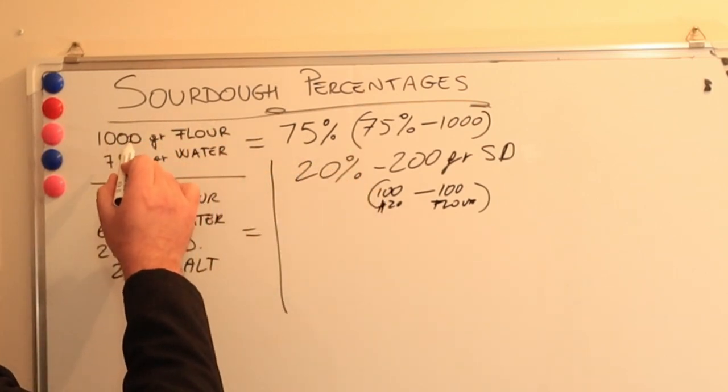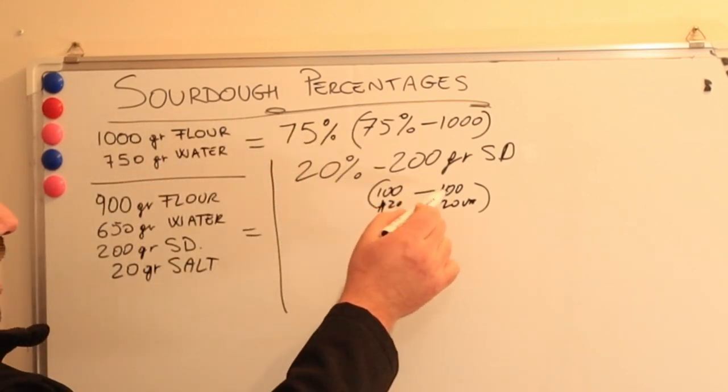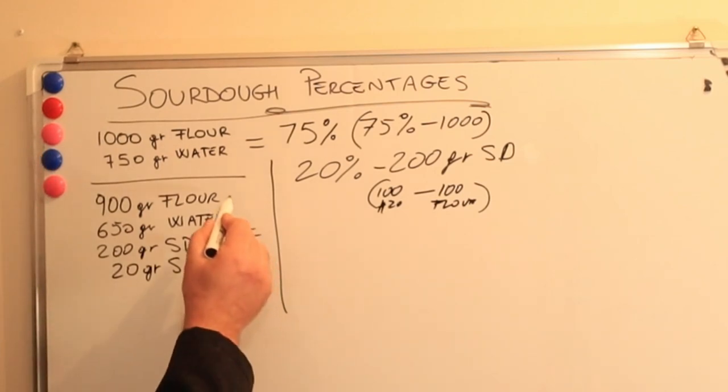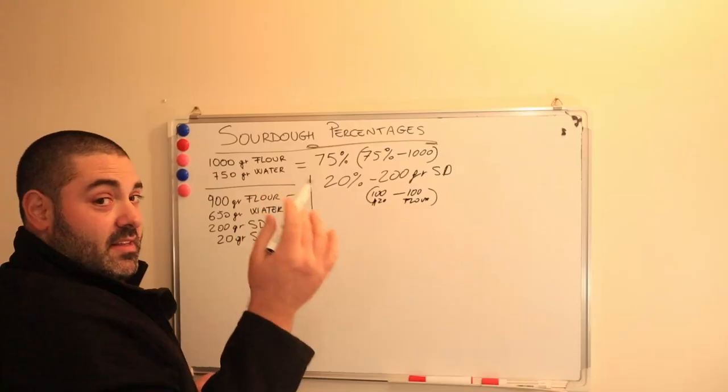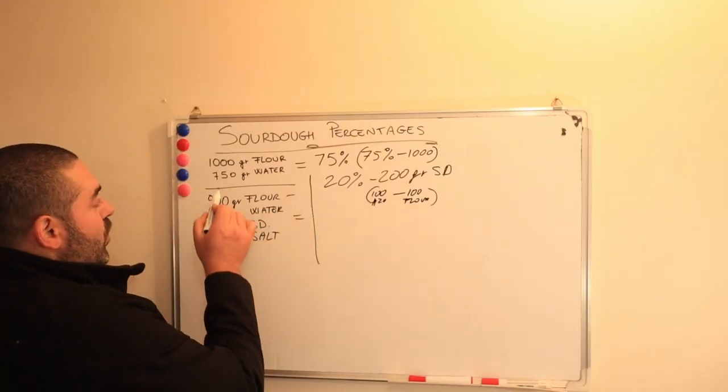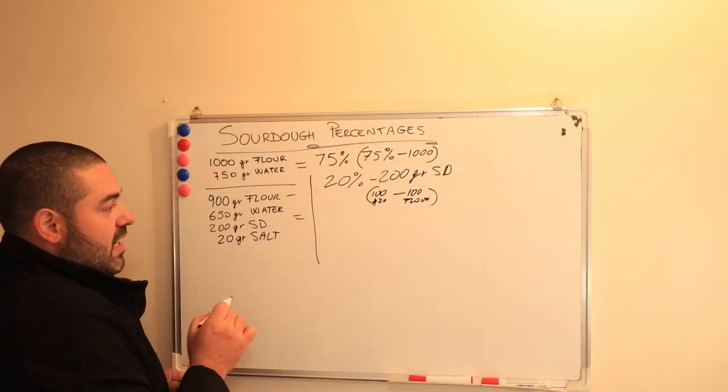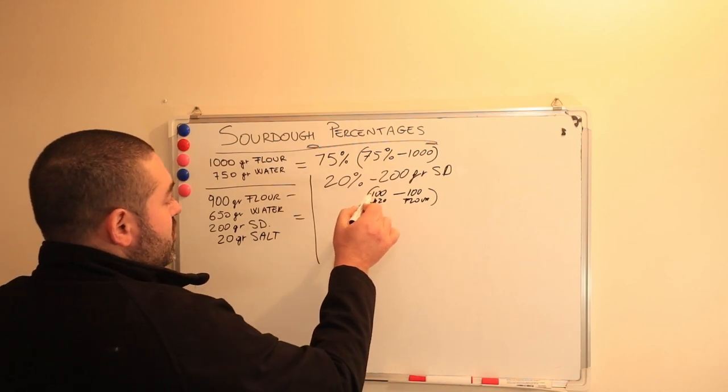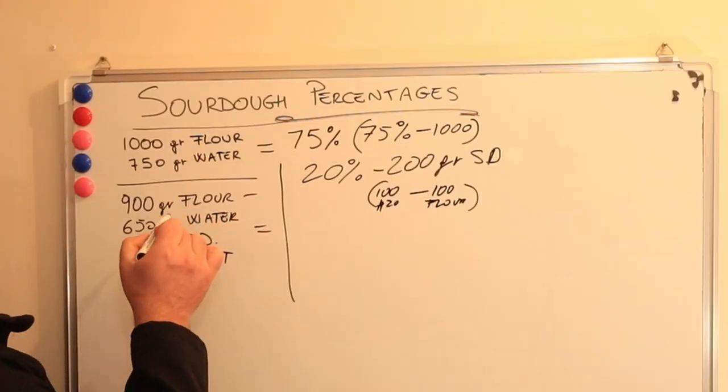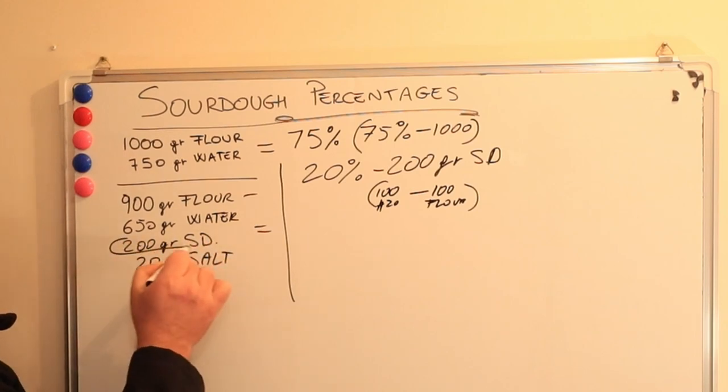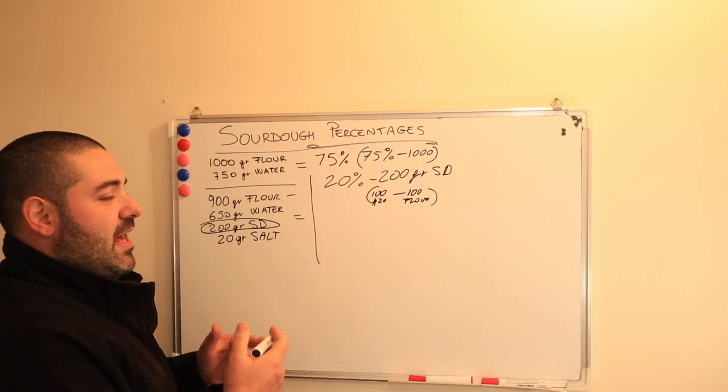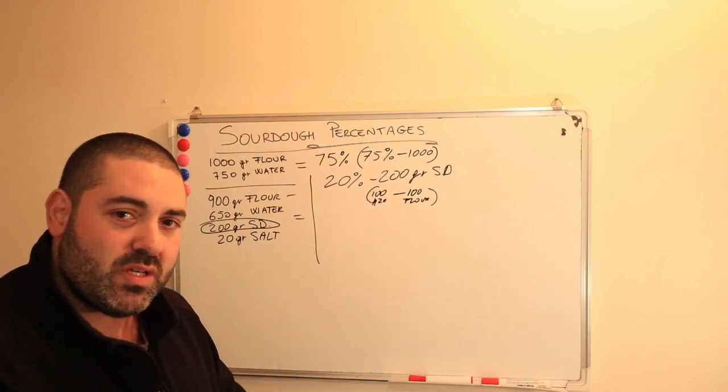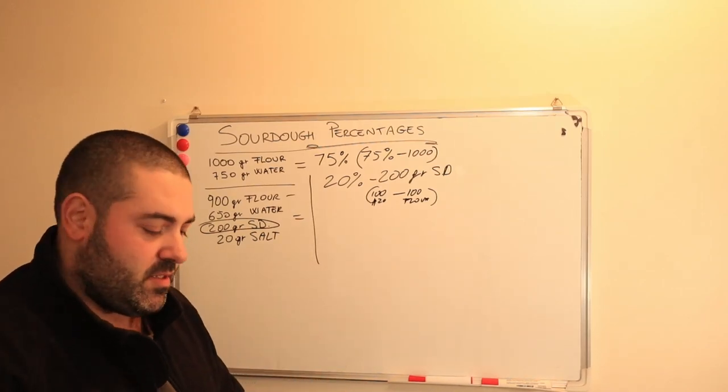So of course, 1000 grams of flour minus 100 grams equals 900 grams of flour. The other way, we have 750 grams of water, we will need to remove 100 grams of water from the original amount because it's already in the sourdough culture. So now we have accounted for that, we basically understood how to find percentages.